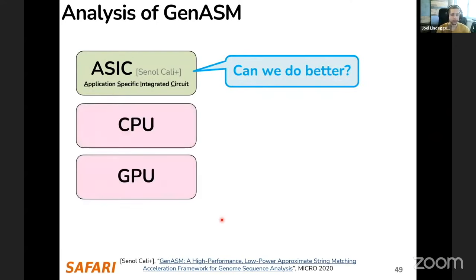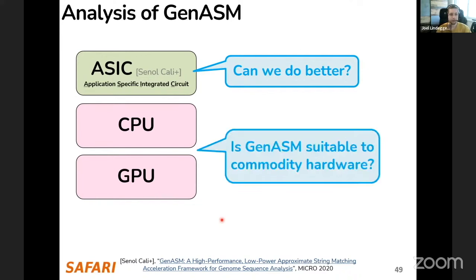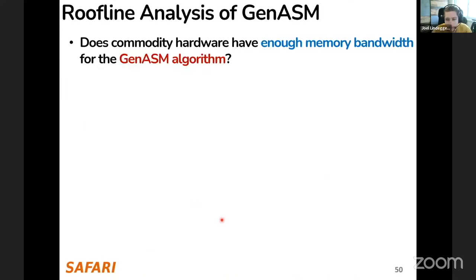We just looked at the ASIC of GenASM, and the key question here is: can we do better? In particular, can we build a more efficient hardware accelerator? And then if you look at commodity hardware, which GenASM didn't target at all — commodity hardware being something you can buy, like CPUs and GPUs — the question is: is GenASM suitable to this commodity hardware, or can it be made suitable?